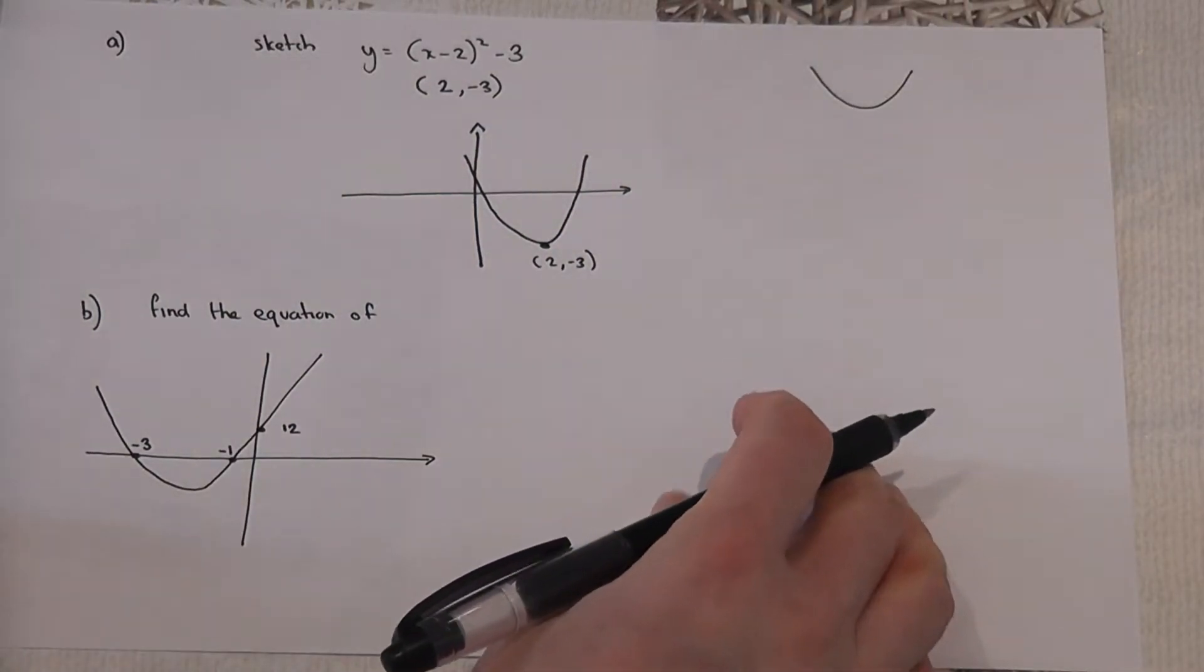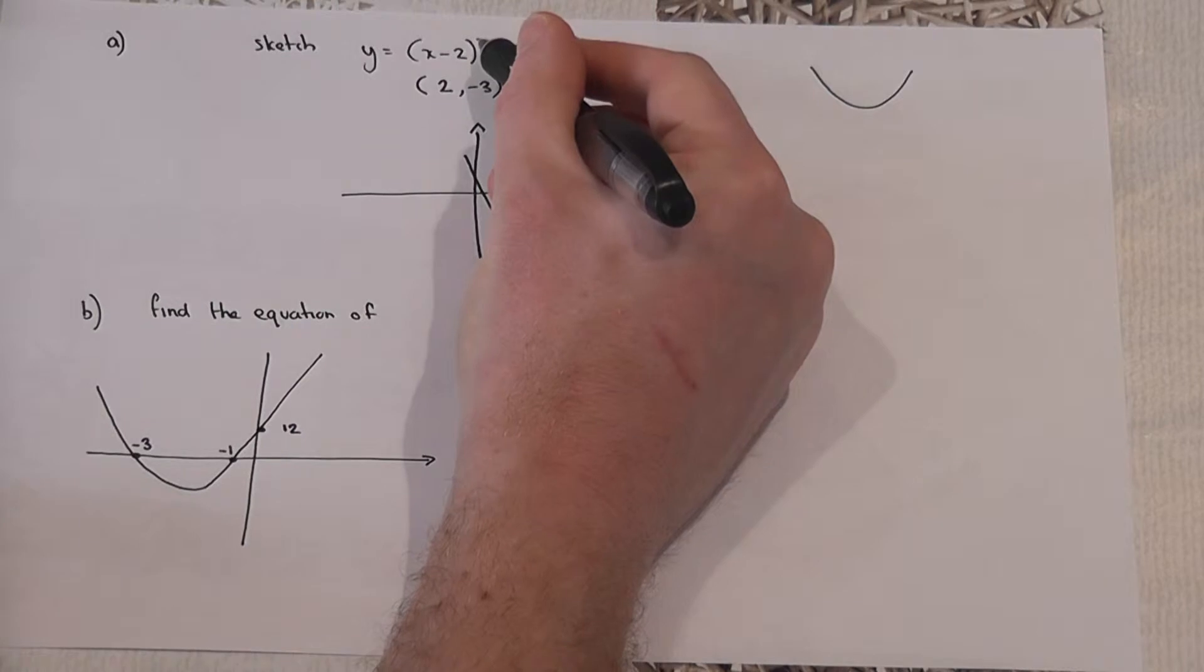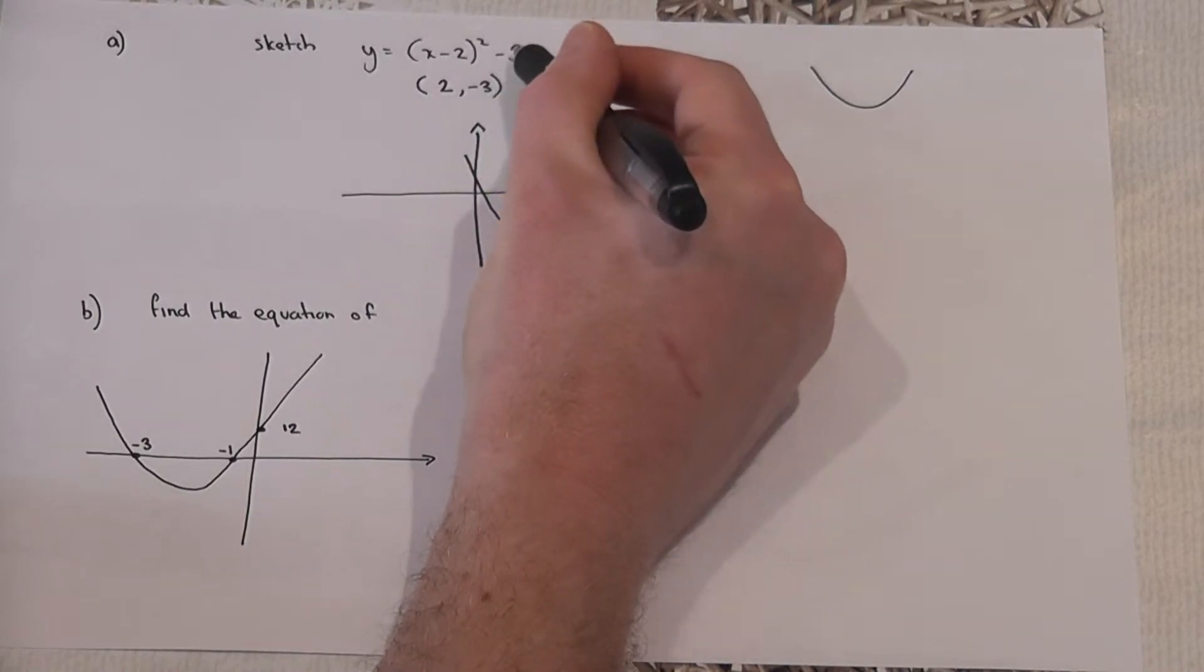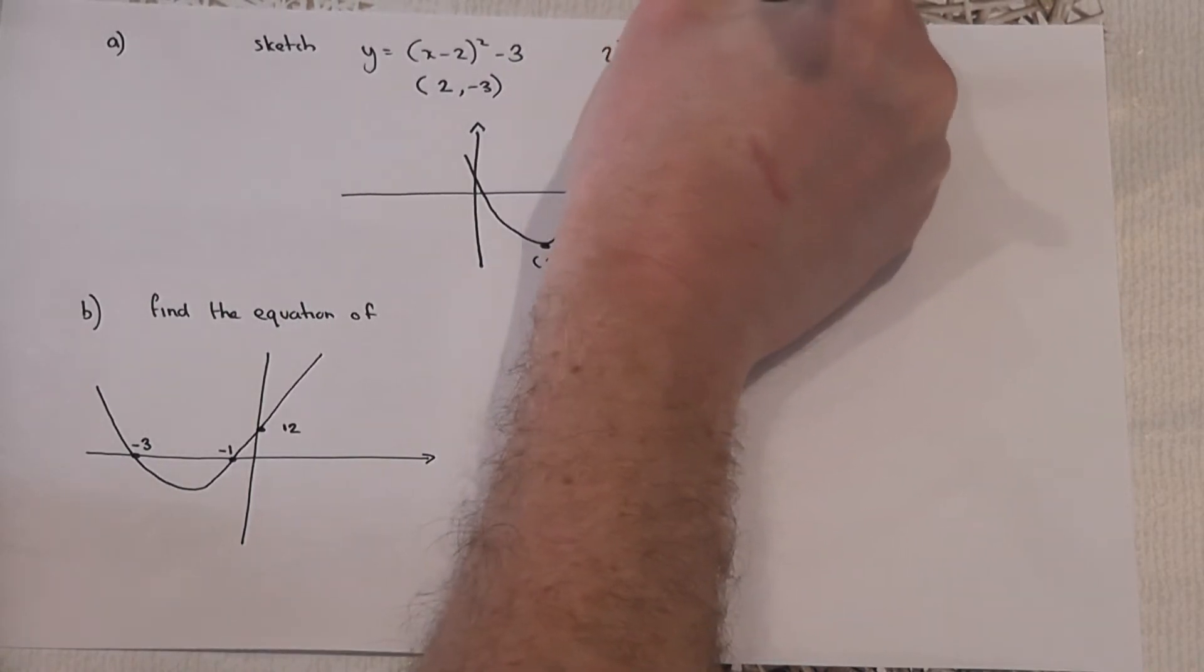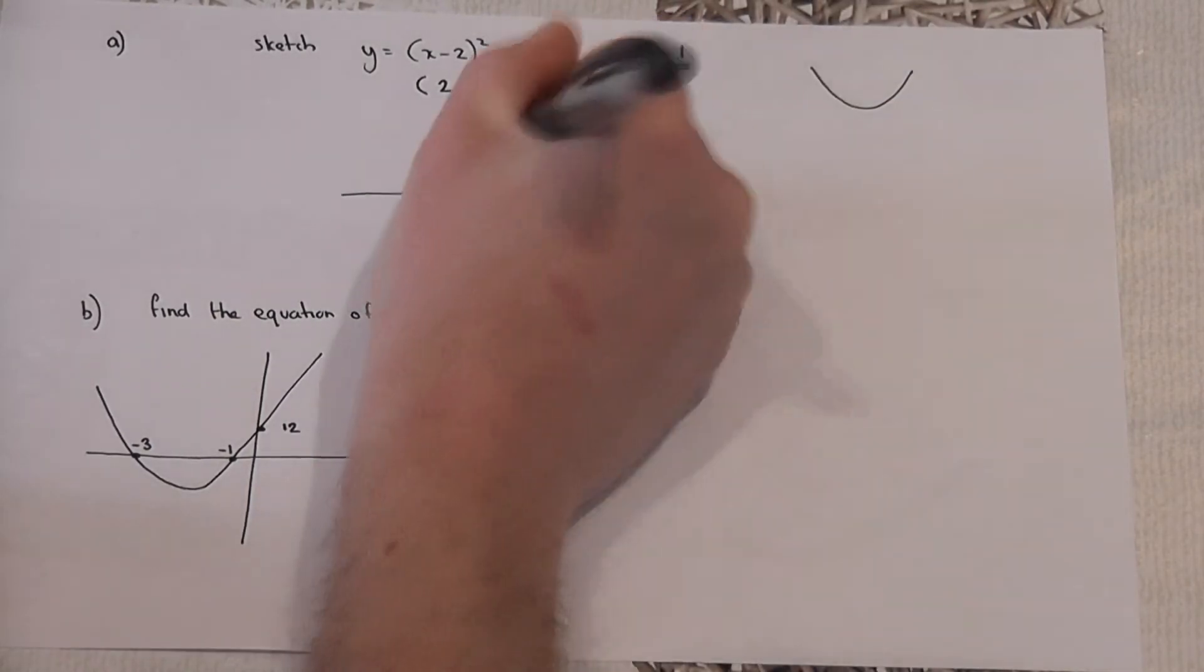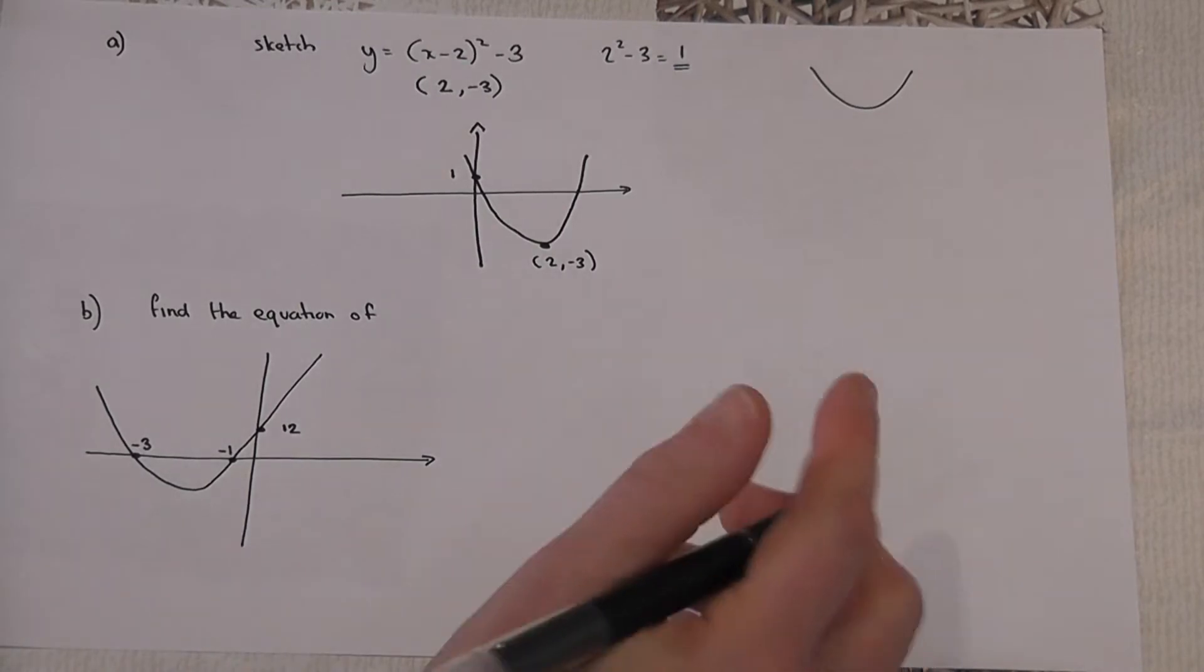And just for completeness we can also find the y-intercept. To do this, all you do is you square the number in the bracket. Two squared is four, take away three, equals one. This is actually the value of the y-intercept. This is the sketch of the graph.